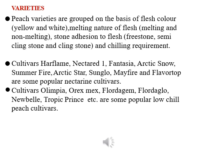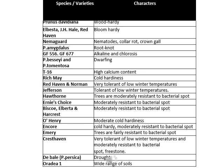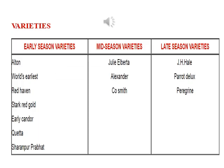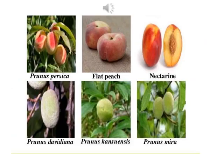Some popular low chill peach cultivars include Olympia, Oryxmax, Flordagem, Flordaglo, Newville, Tropic Prince, etc. There are three types of varieties of peach by season. Early season varieties include Alton, World's Earliest, and Red Hammond. Mid-season varieties include Julie, Alberta, Alexander, and Cosimeth. Late season varieties include J.H. Hale, Parrot, Deluxe, and Nectarine. In this slide you can see the different types of peach discussed earlier.